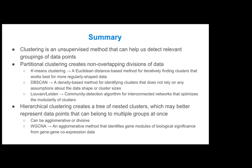Hierarchical clustering can be agglomerative or divisive. I talked mostly about agglomerative methods, because divisive methods are not very often seen and not usually very applicable in the real world. One method I specifically discussed in this lecture is Weighted Gene Co-Expression Network Analysis, or WGCNA, which is an agglomerative method that identifies gene modules of biological significance from an input of gene-gene co-expression data.